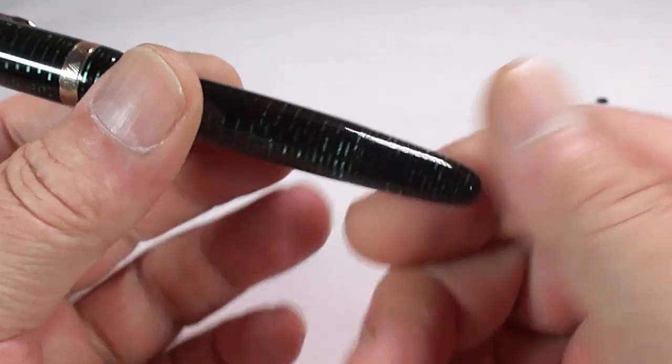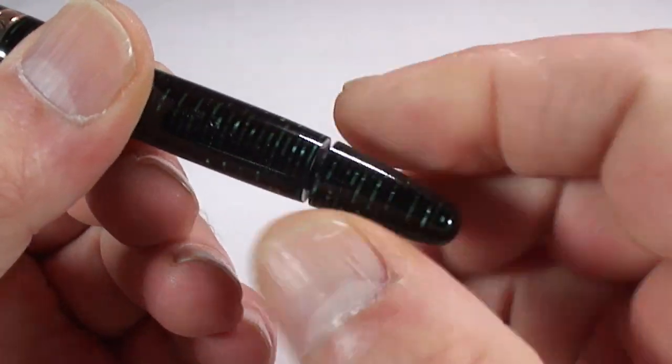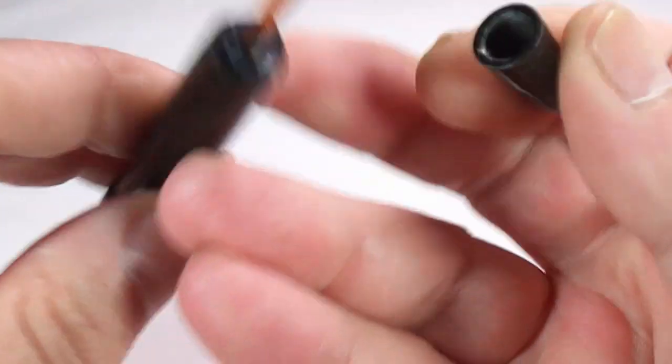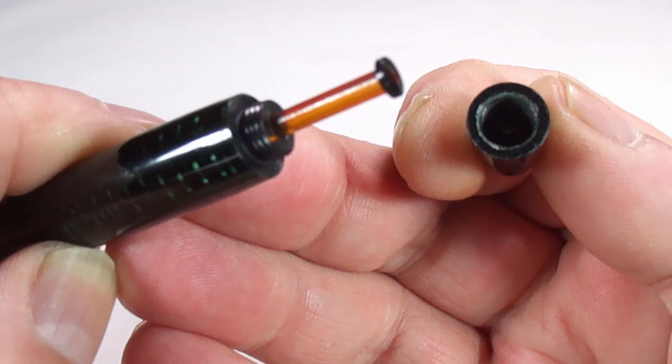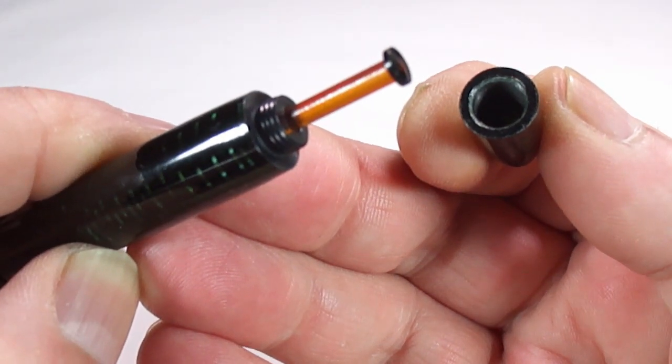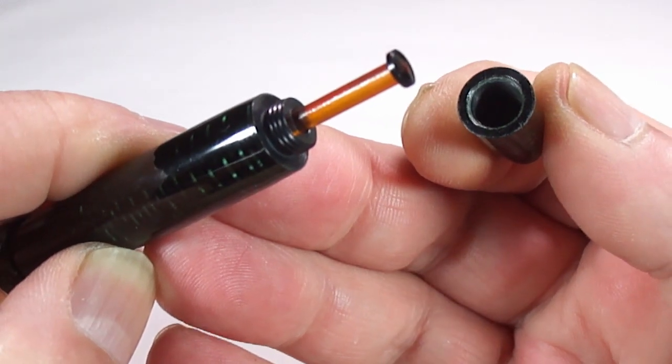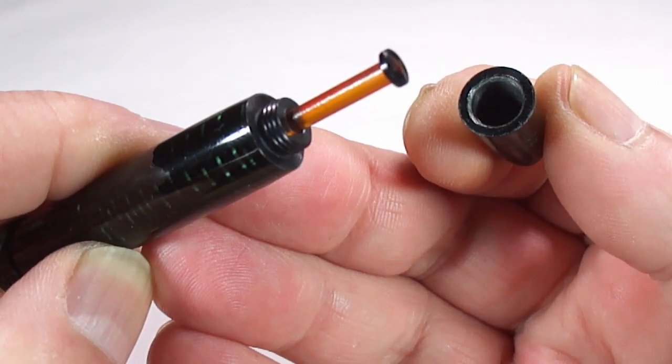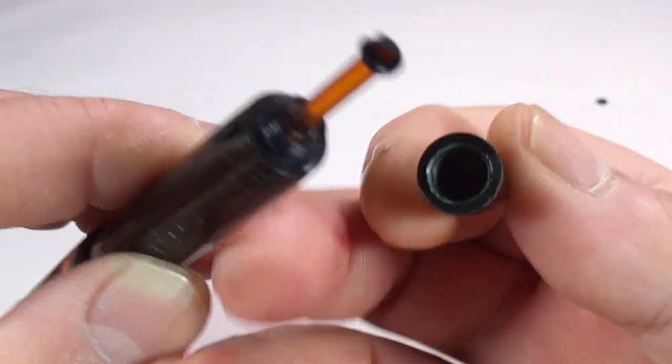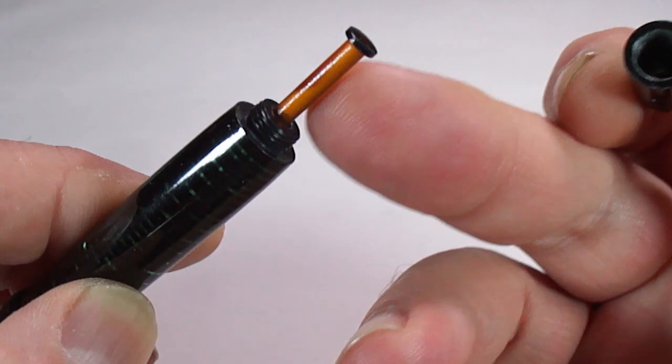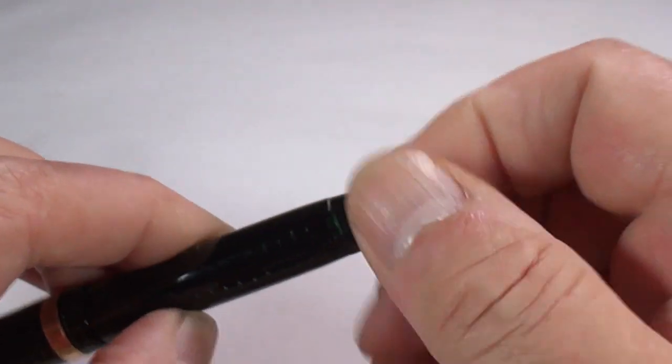As we said, Vacumatic. So to the bottom here, we've got this blind cap. And there we go, we've got the plastic filler as you can see there. So this one is telling us it's actually the third generation, because the first generation was a lockdown filler. The second was what they termed as a speed line filler. And then the third generation was this, what we term as a plastic filler.